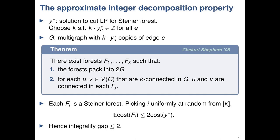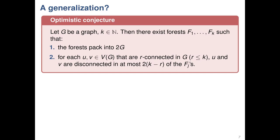Our starting point was to extend this theorem to the prize-collecting setting. So what would that look like? I give you a multigraph G and an integer K. Do there exist forests F1 through F_K that again pack into 2 times G, where now instead of requiring every pair to be connected, if U and V are R-connected where R ≤ K, we require that U and V are disconnected in at most 2(K − R) of these forests? When R = K, this just says they're always connected as before.